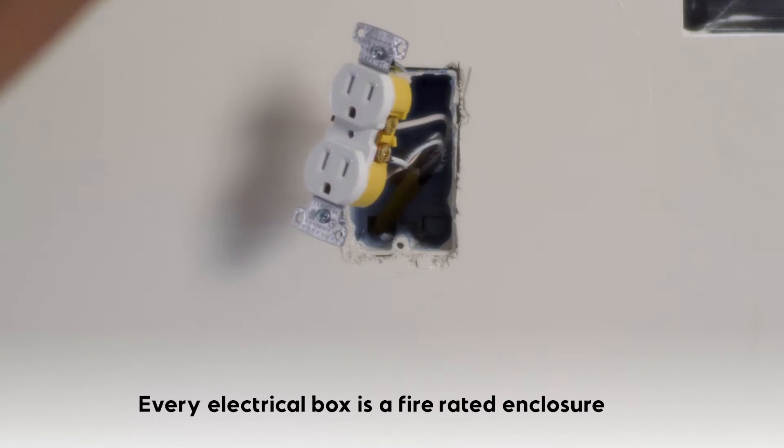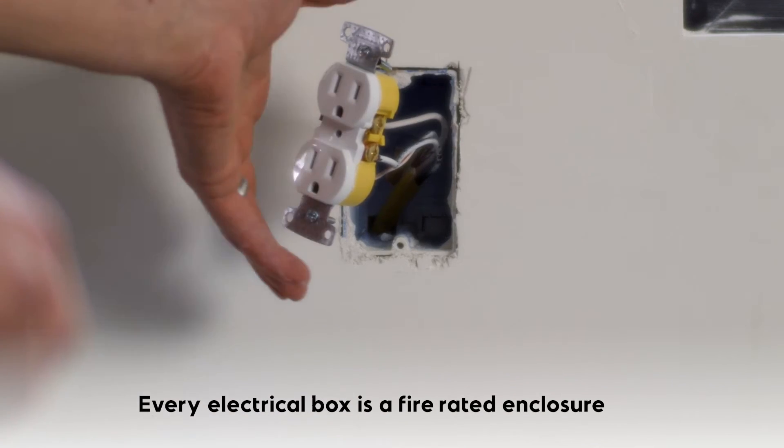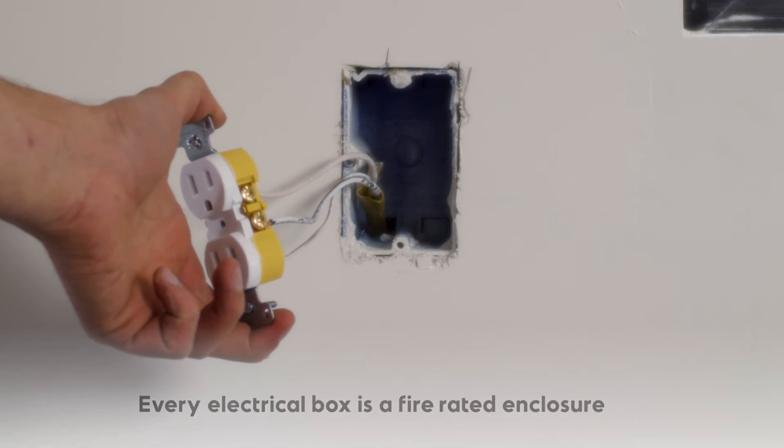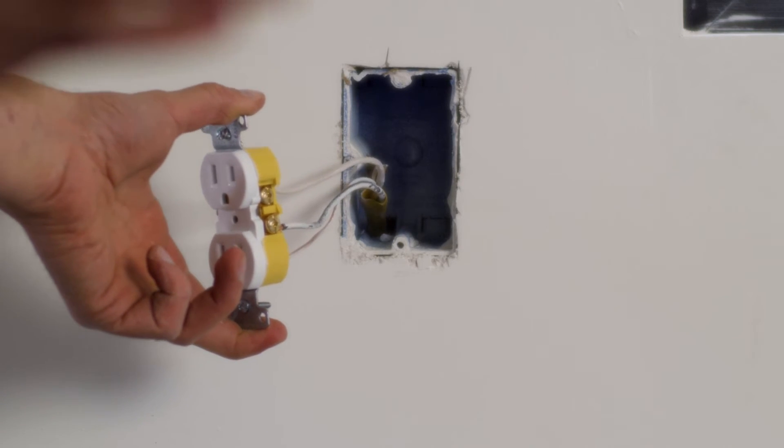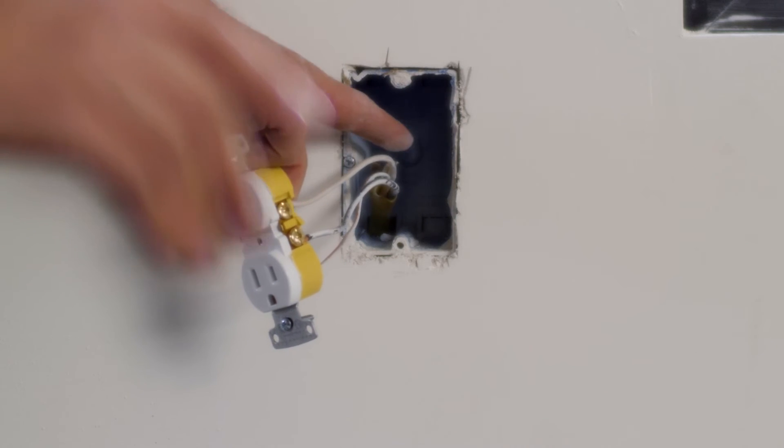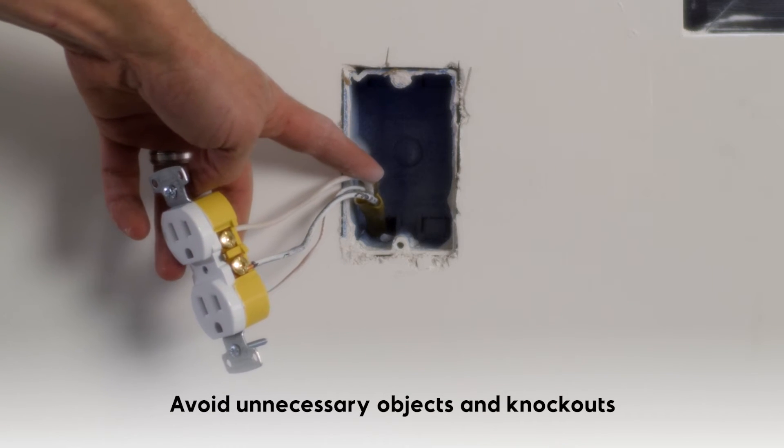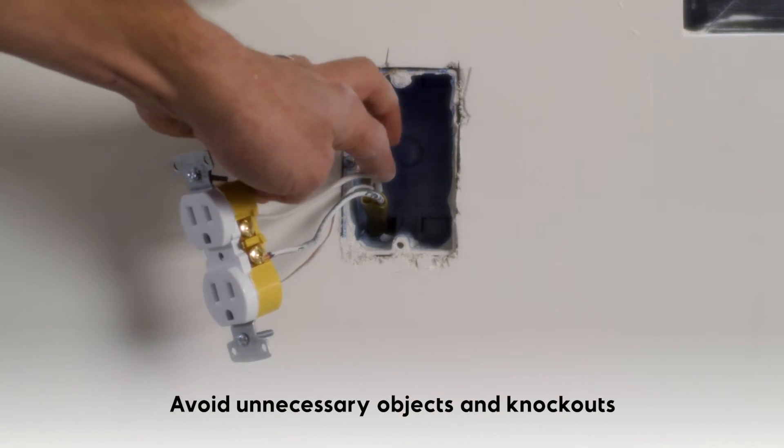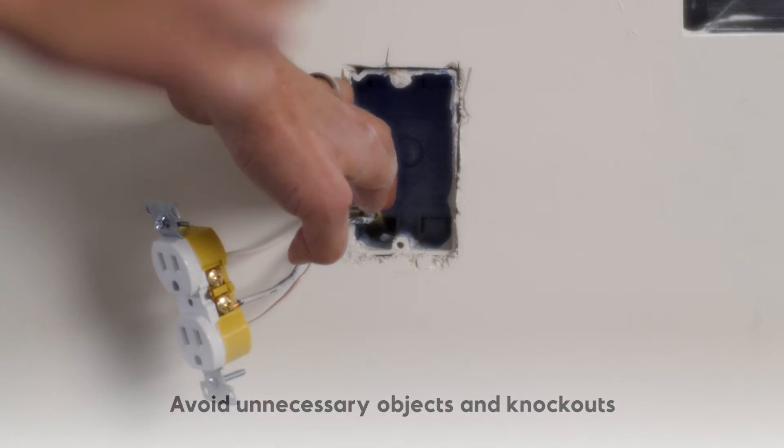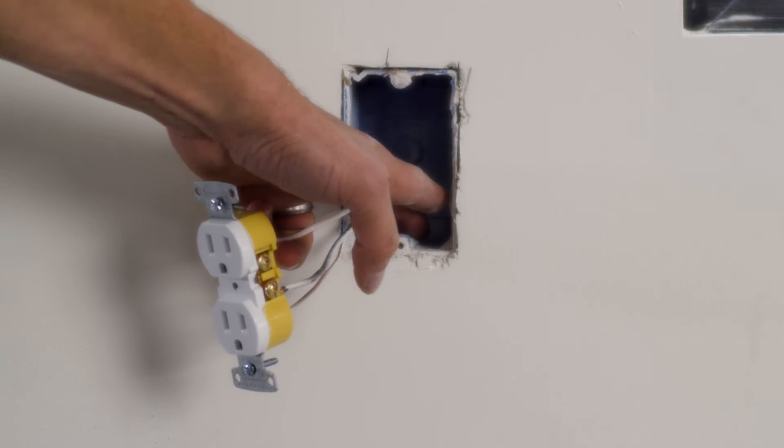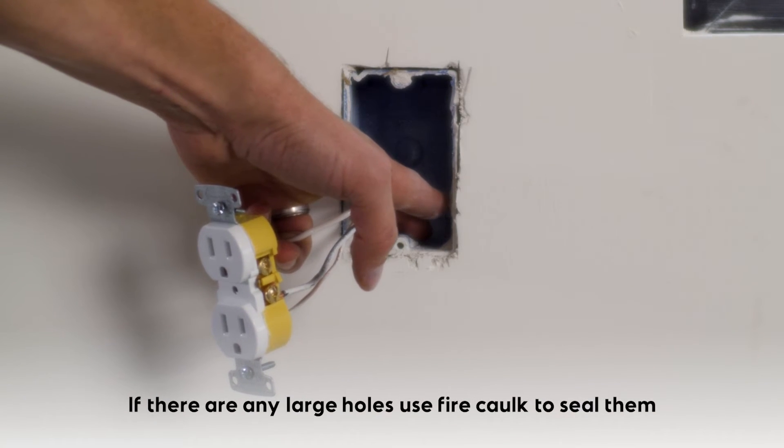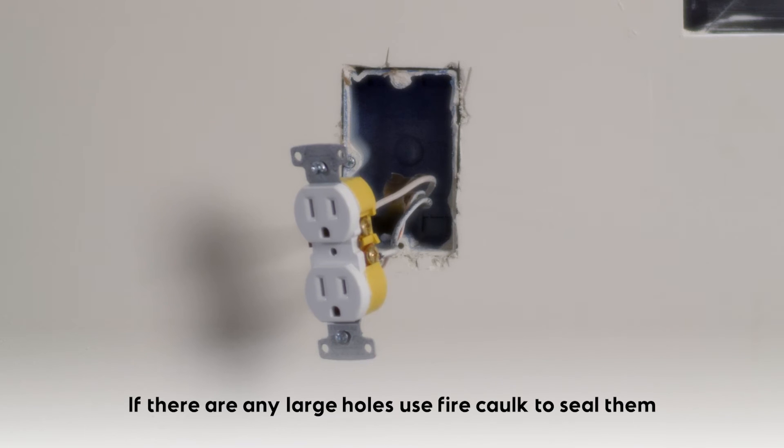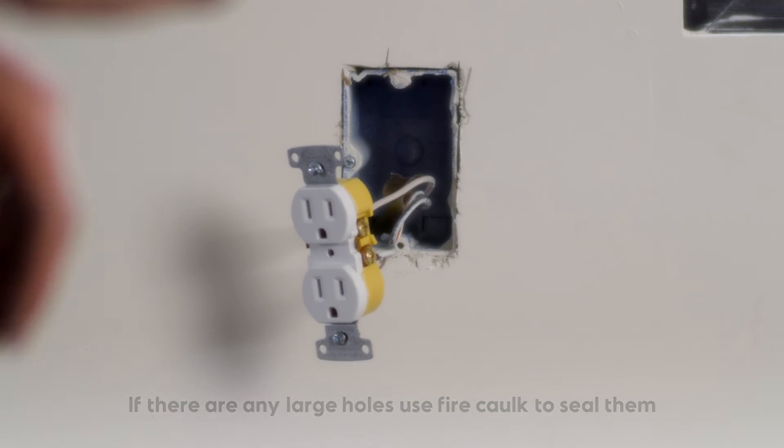Drywall is non-combustible, but I don't really want to have an excessive amount of drywall inside my box. Every electrical box is a fire-rated enclosure, so I want to avoid a couple of things: I want to avoid having wood chips or anything that's combustible. I want to avoid having any type of foreign object. I want to avoid unnecessary knockouts and openings in my box. The box should not be drilled or cut abnormally. If there is a large opening that does not have a wire through it, then I'm going to use fire caulk to seal that hole as part of retaining the fire enclosure of that box.